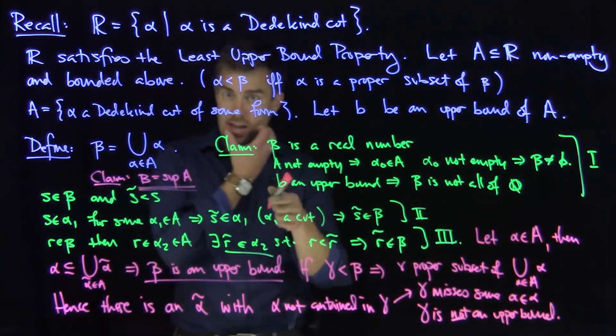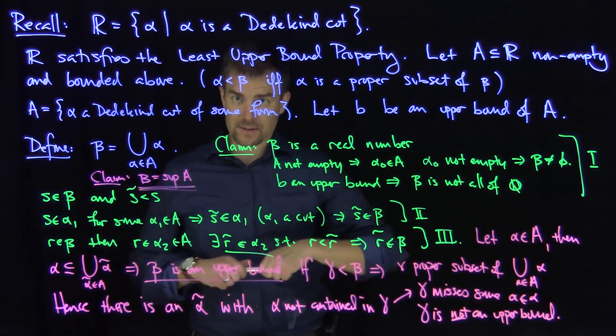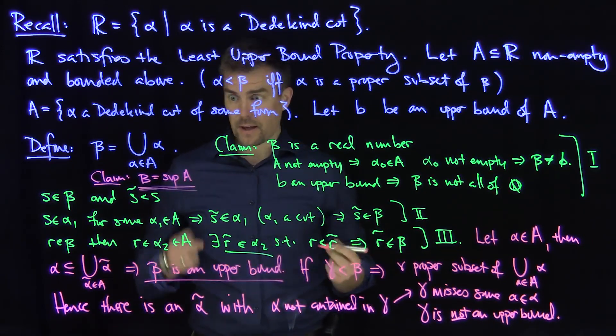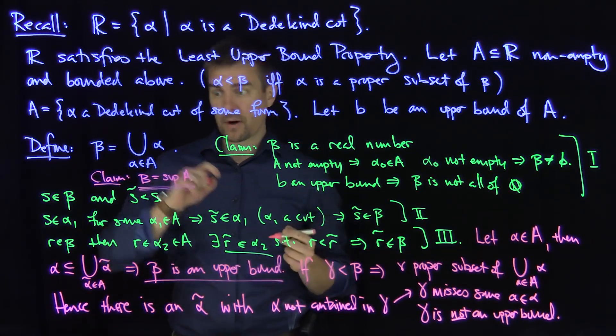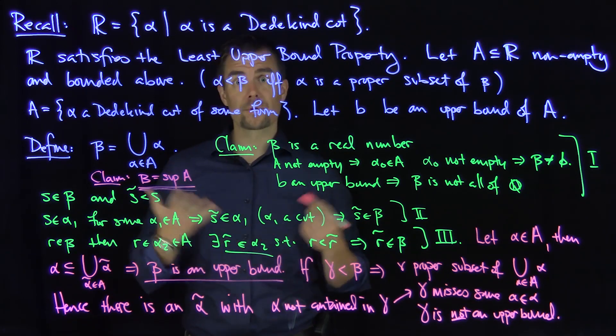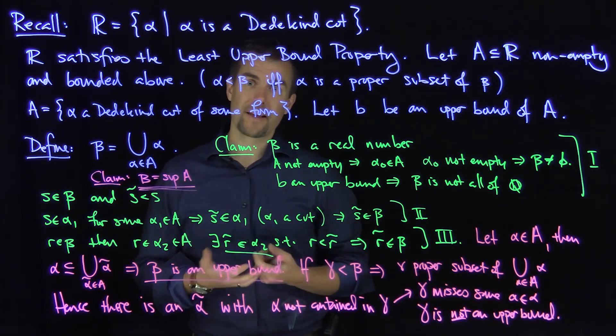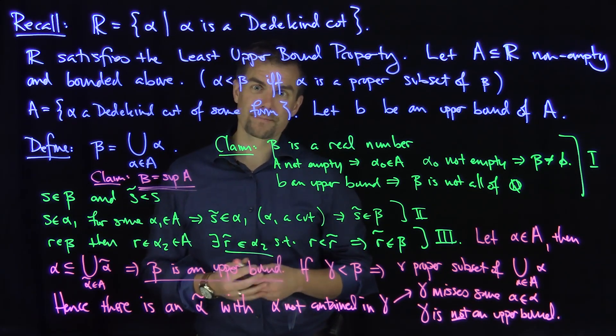The conclusion is that this beta is in fact the supremum of A. The supremum of A is a real number, it exists in the set of real numbers, it is an upper bound, and moreover it is the least upper bound. Therefore the supremum exists in the set R. Thank you very much.